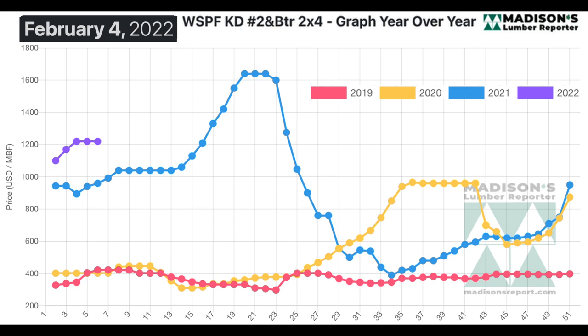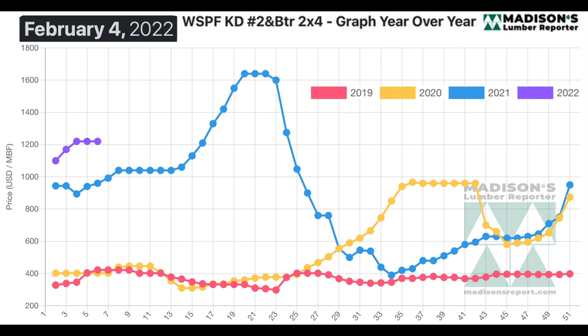The purple line far on the left — that's this year. This is very exciting for me to explain, and pardon me as I geek out, but this is what I do all day. Once again, this is February 4th, 2022 prices. On the top you've got the 2x4 randoms as I explained before. The top one is your number two and better, the standard grade. Then you've got the number three utility.